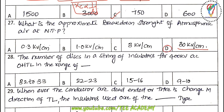Twenty-eighth question: the number of disks in a string of insulators for a 400 kV AC overhead transmission line — convert line voltage to phase voltage and you will find it requires approximately 22 disks, plus one for a factor of safety, giving 23 disks.